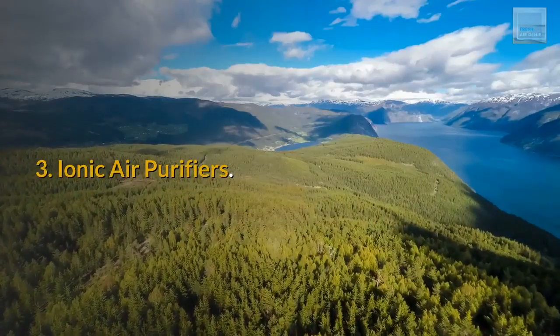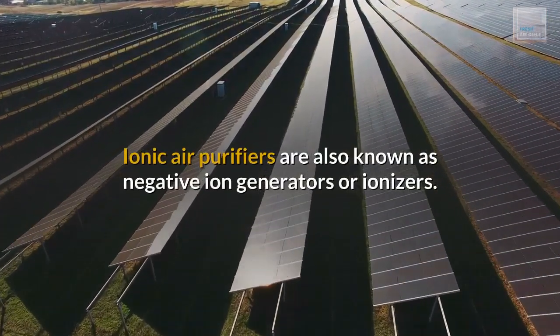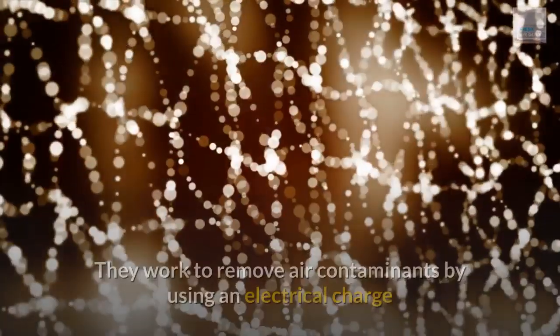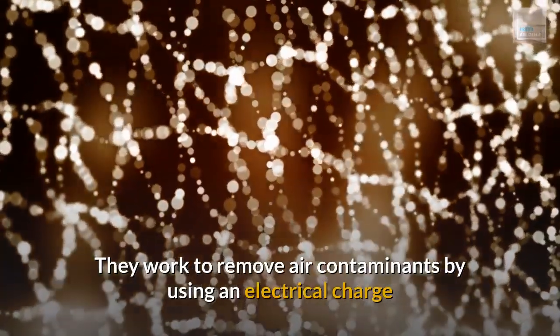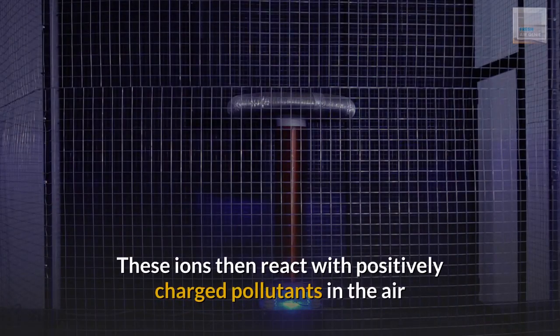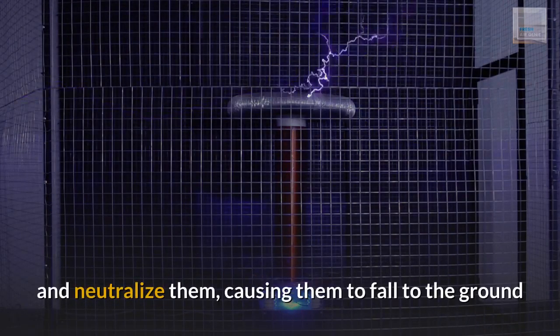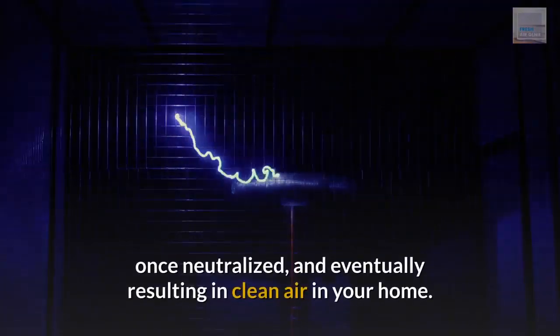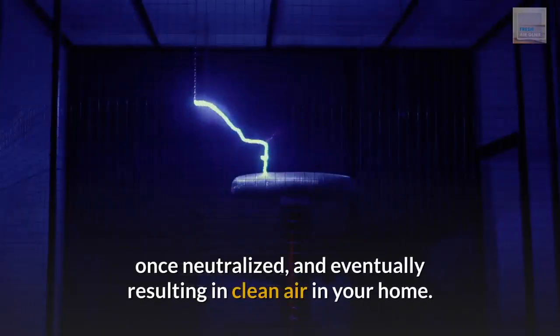Number 3: Ionic air purifiers. Ionic air purifiers are also known as negative ion generators or ionizers. They work to remove air contaminants by using an electrical charge to produce negative ions, which are then released in the air. These ions then react with positively charged pollutants in the air and neutralize them, causing them to fall to the ground as they become too heavy to stay suspended in the air once neutralized, and eventually resulting in clean air in your home.